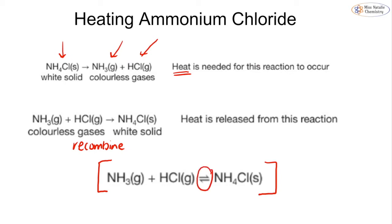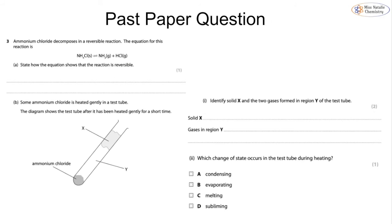Let's have a look at a past paper question on this. We're going to be looking specifically at the ammonium chloride reaction. Part A asks us to show how is this reaction reversible. That's very simple. We have to just simply look at the equation and say the equation uses this symbol, or you can even say it has a double-headed arrow, which is the reversible arrow.